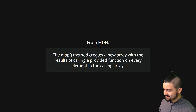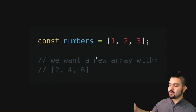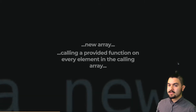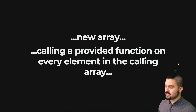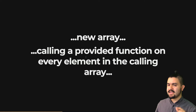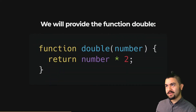Now let's break that down. Let's say we have an array of numbers like this — an array with the numbers 1, 2, and 3 — and we want to create a new array that has 2, 4, and 6 inside of it. Thinking back to that definition, we want a new array, calling a provided function on every element in the calling array.